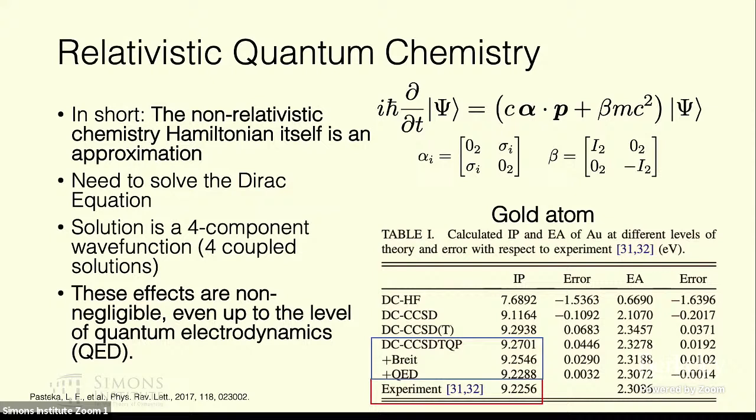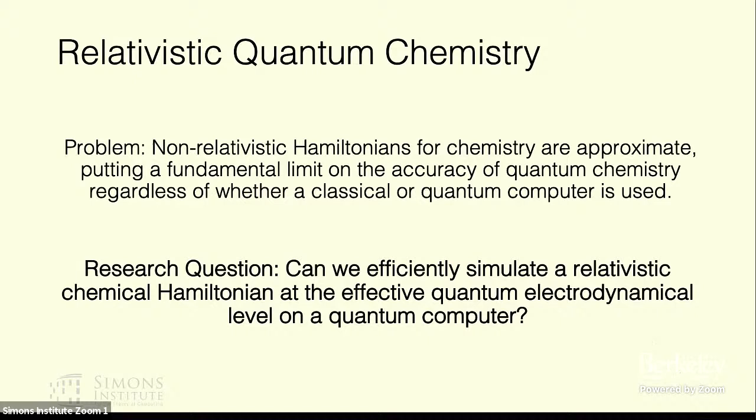What we need to do is to use the Dirac equation instead of the Schrödinger equation to accurately model systems that have heavy element containing atoms. So as you can see in this example here, this is a theoretical calculation done. Basically the takeaway is that for some property of interest, in this case it's the ionization potential, in order to get quantitative accuracy with experiment we actually have to have both a very close description. So this is basically a method that is very expensive and closely approximates the exact wave function but also includes relativistic effects up to the QED level. So basically the takeaway here is that since non-relativistic Hamiltonians are approximate, that actually puts a fundamental limit on the accuracy of quantum chemistry regardless of whether you're using a classical or quantum computer.